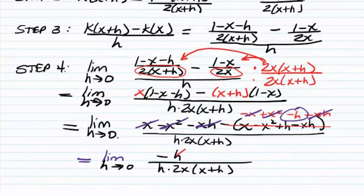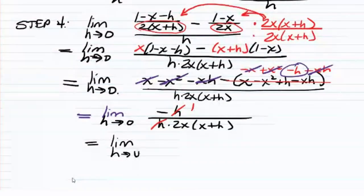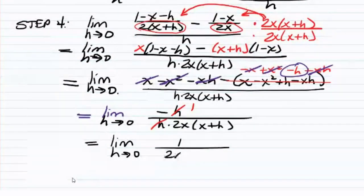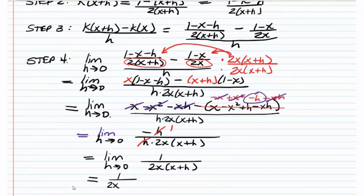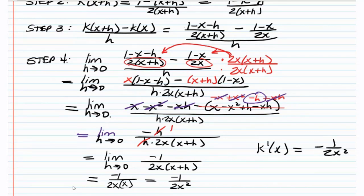So we have the limit as h goes to 0 of negative h over h times 2x times x plus h. We can divide out the h, leaving just negative 1 in the numerator. So we're going to have the limit as h goes to 0 of negative 1 over 2x times x plus h. We have canceled that factor of h that was causing us a problem, so we can just plug in. Once we plug in, we stop writing the limit. So we have negative 1 over 2x times x, which is negative 1 over 2x squared. So k prime of x equals negative 1 over 2x squared. That was part a.